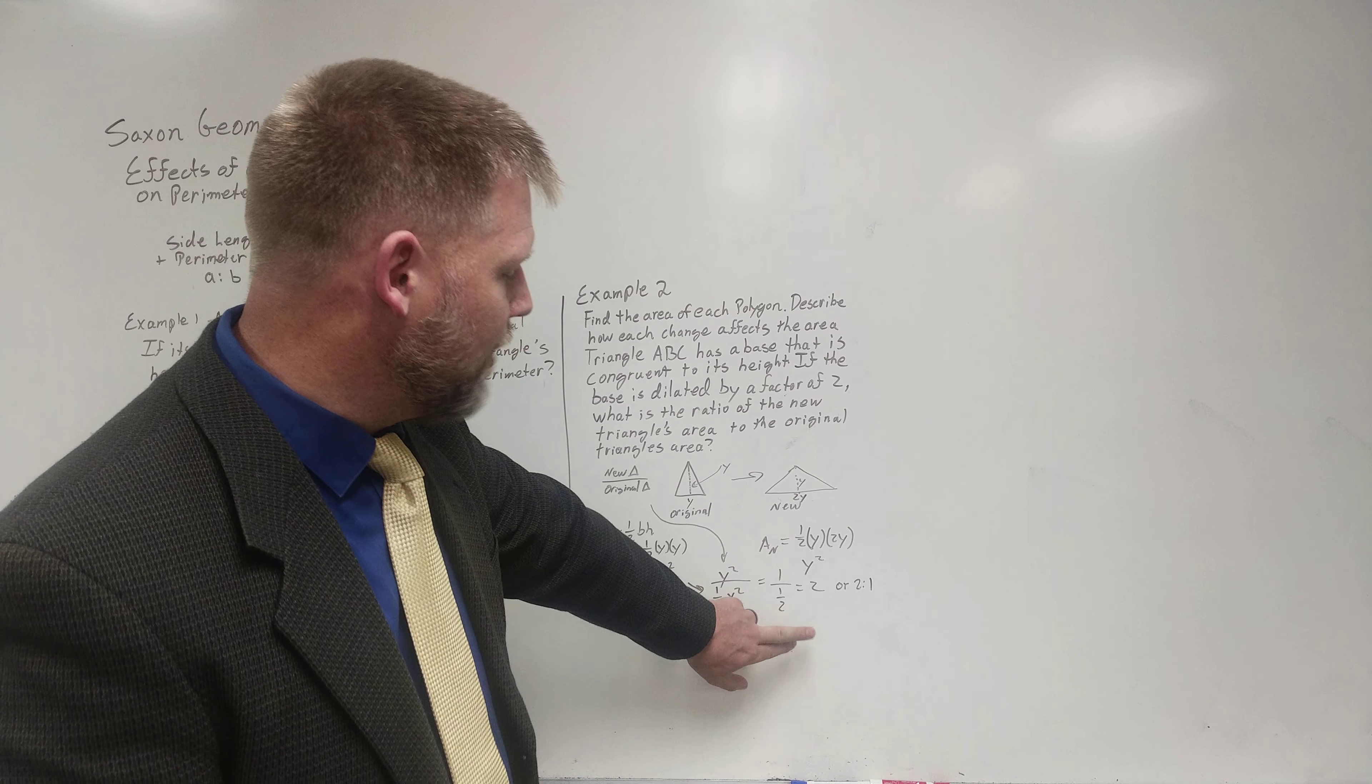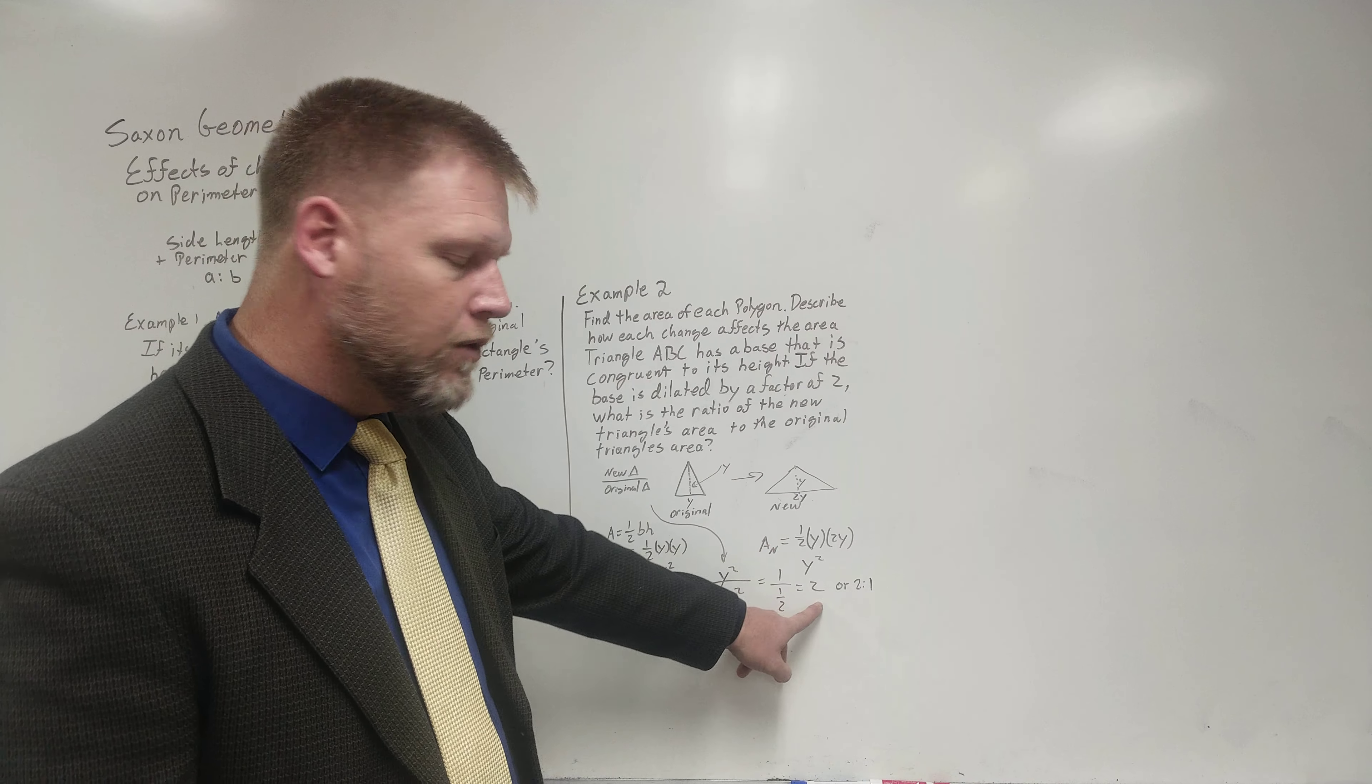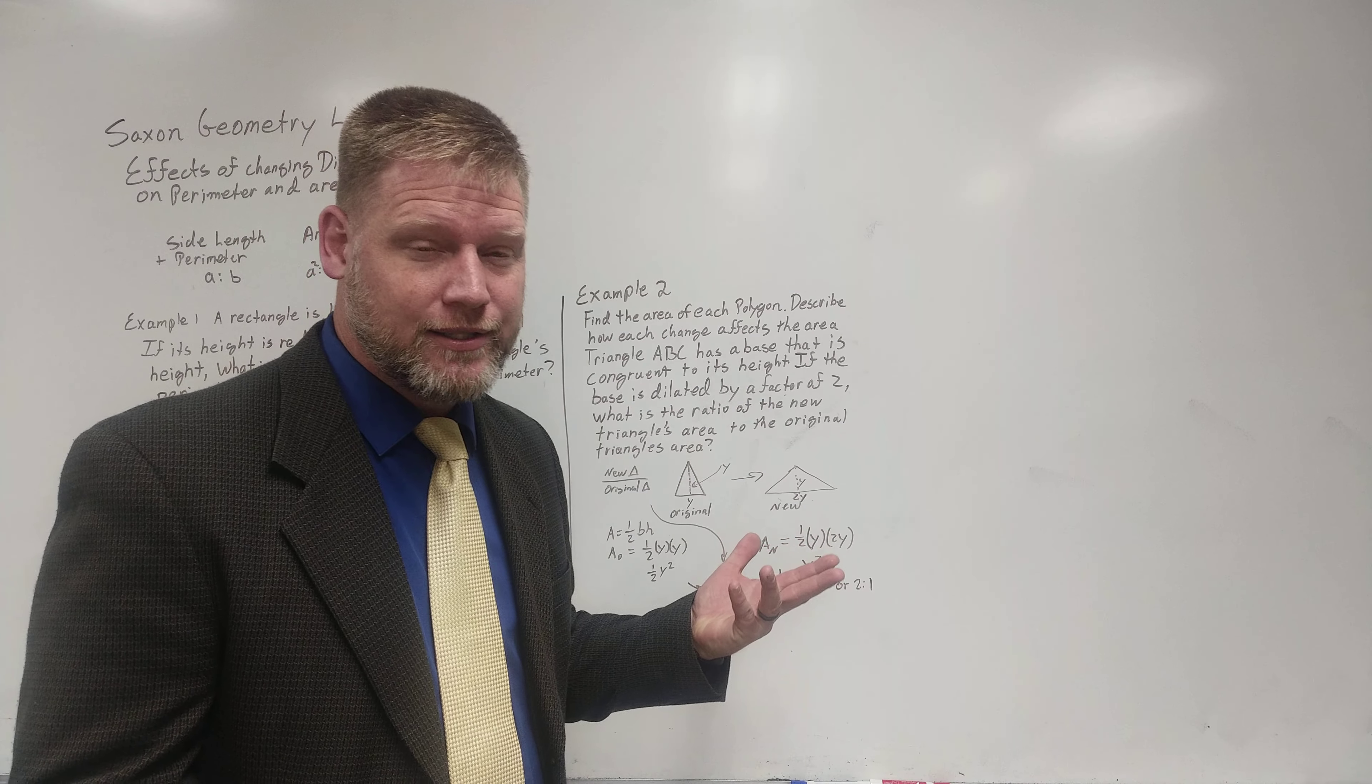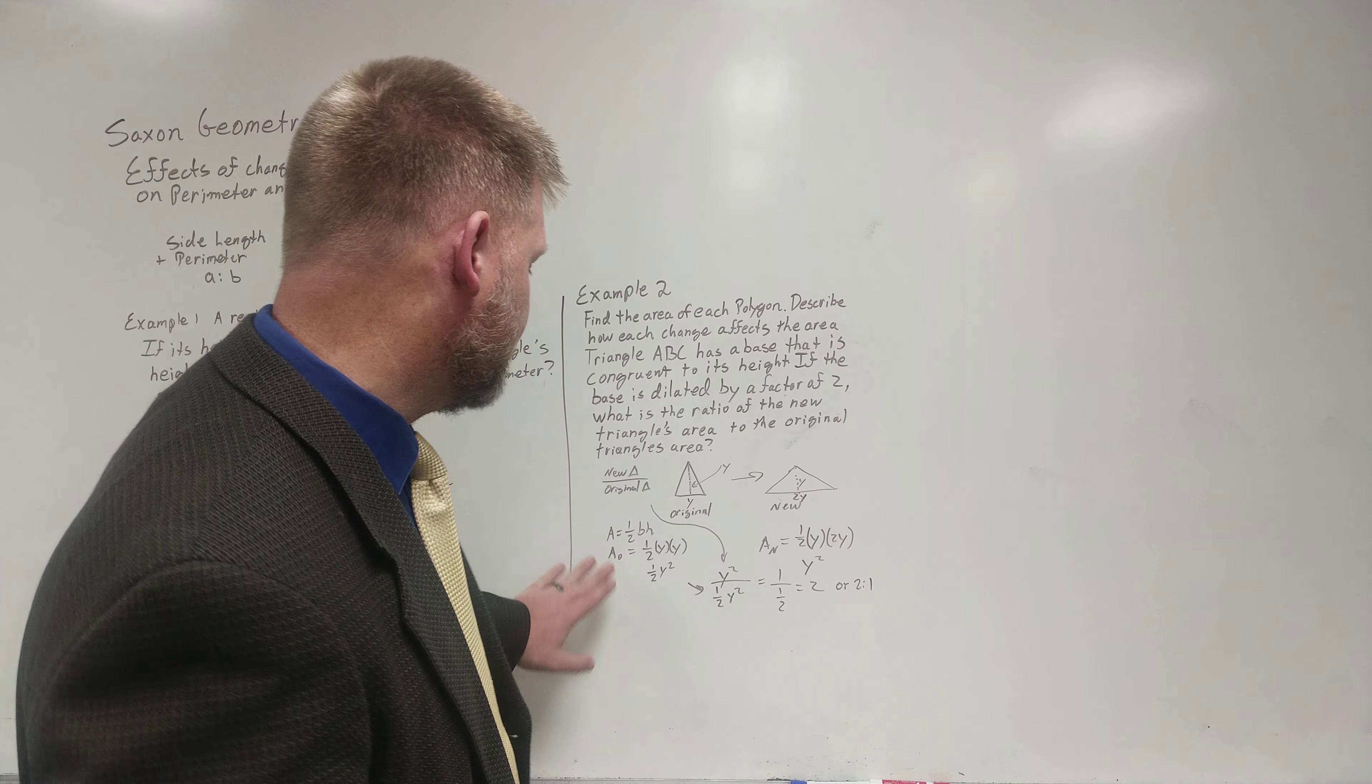Well, one over one half, if I multiply it by two over one, two over one, I get two, which is a two to one ratio. But I think I could figure out that if it's going from one half to one, it's twice as much. I could have probably stopped over here.